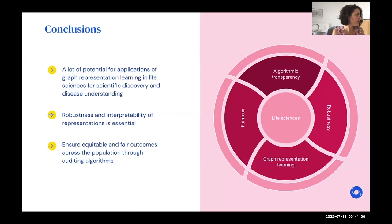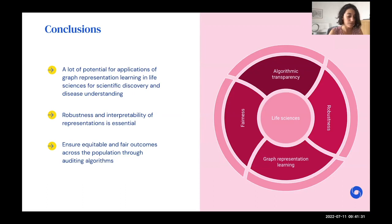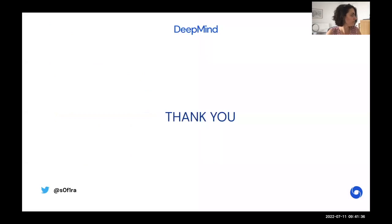To conclude, there is significant potential for graph representation learning in life sciences and neuroimaging for disease understanding. However, it is crucial to focus on robustness and interpretability of representations, and to carefully audit models to ensure equitable and fair outcomes across the population.